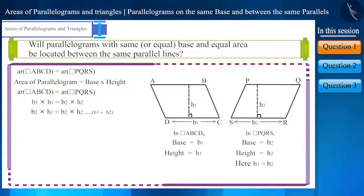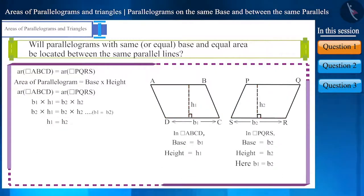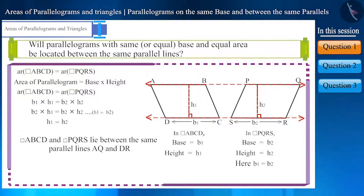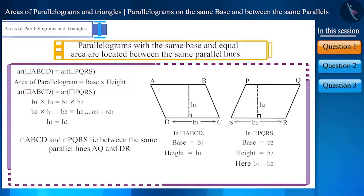Thus, we get H1 equal to H2. We can see that the two parallelograms whose bases and areas are equal are also of equal height — H1 equals H2 — which means they are located between the same parallel lines. Therefore, we can say that parallelograms with the same base or equal bases and equal areas lie between the same parallel lines.